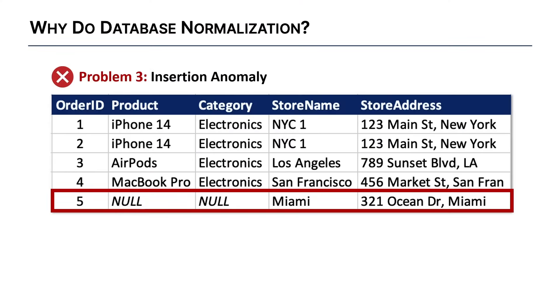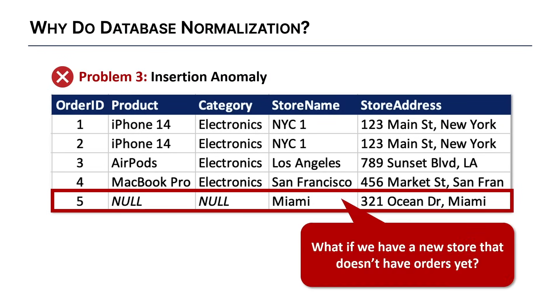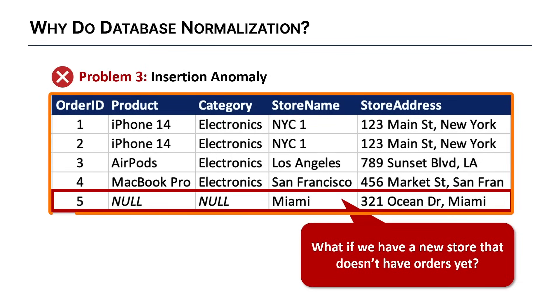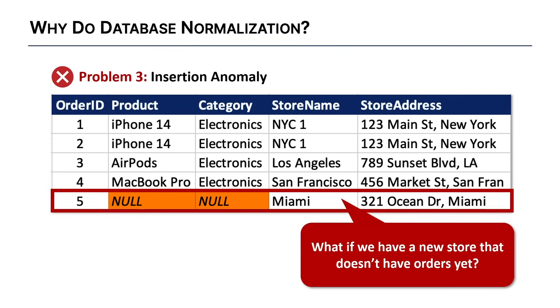The third problem is an insertion anomaly. This happens when we're unable to add new information to the database because of the way it's structured. For example, suppose we've added a new store called the Miami one, but haven't received any orders yet. Because of our current table structure, we're forced to include null values, which introduces incomplete data and can make those null values look like errors. Data normalization solves this by storing new information in a separate area.